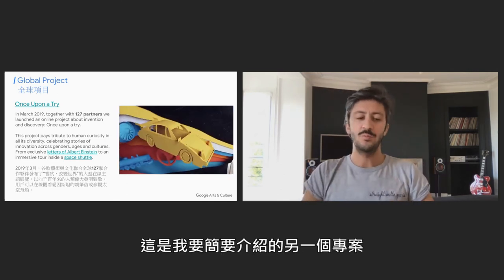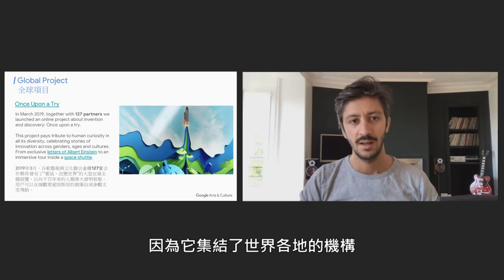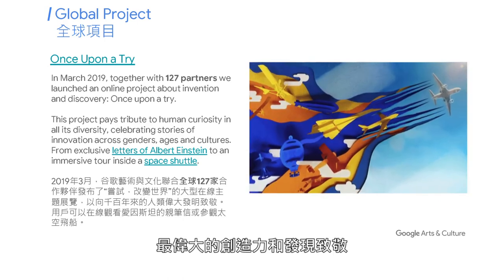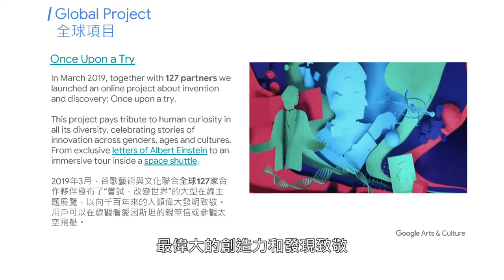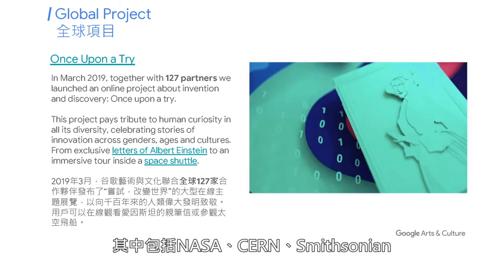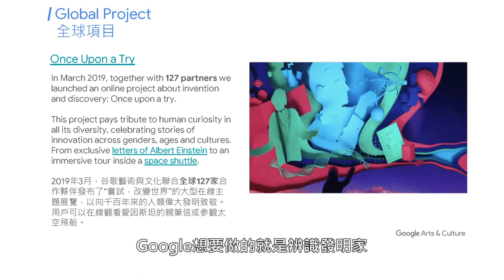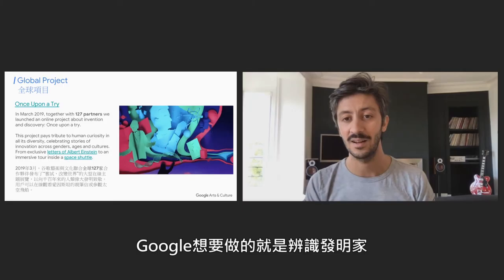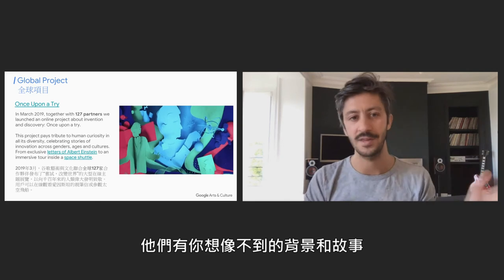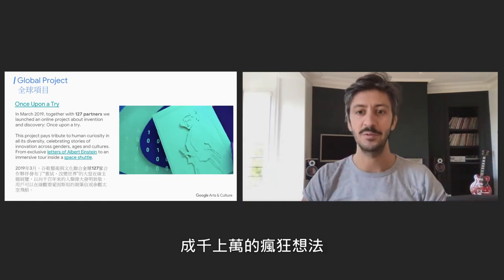Another project I wanted to tell you about brings together institutions from across the world. We wanted to pay tribute with our partners to mankind's greatest capacity — inventing and discovering. We called this project Once Upon a Try. We launched it last year with more than 100 institutions, including NASA, CERN, the Smithsonian, the Sichuan Museum in China, and many other great institutions. What we wanted to do is identify great inventors and their background stories, which are really worth discovering. I invite you to discover this project and the thousands of crazy ideas that came to life over the past century.